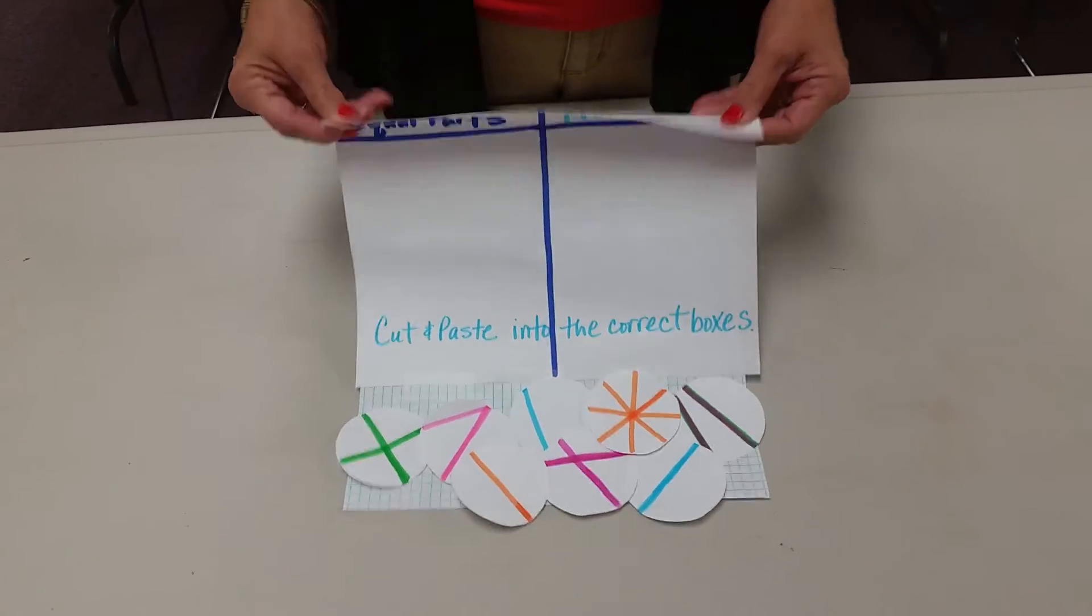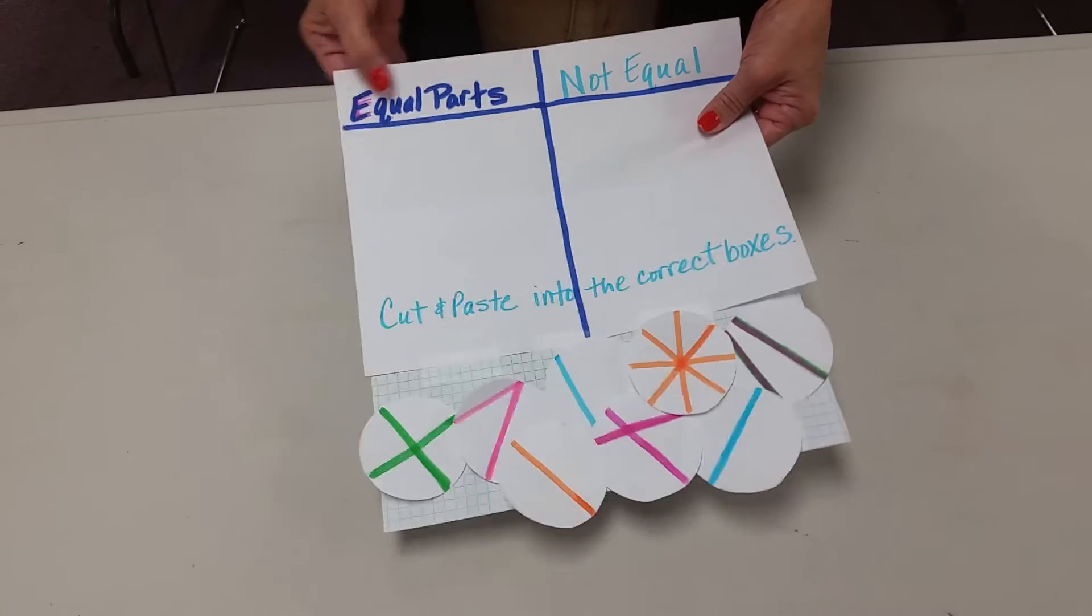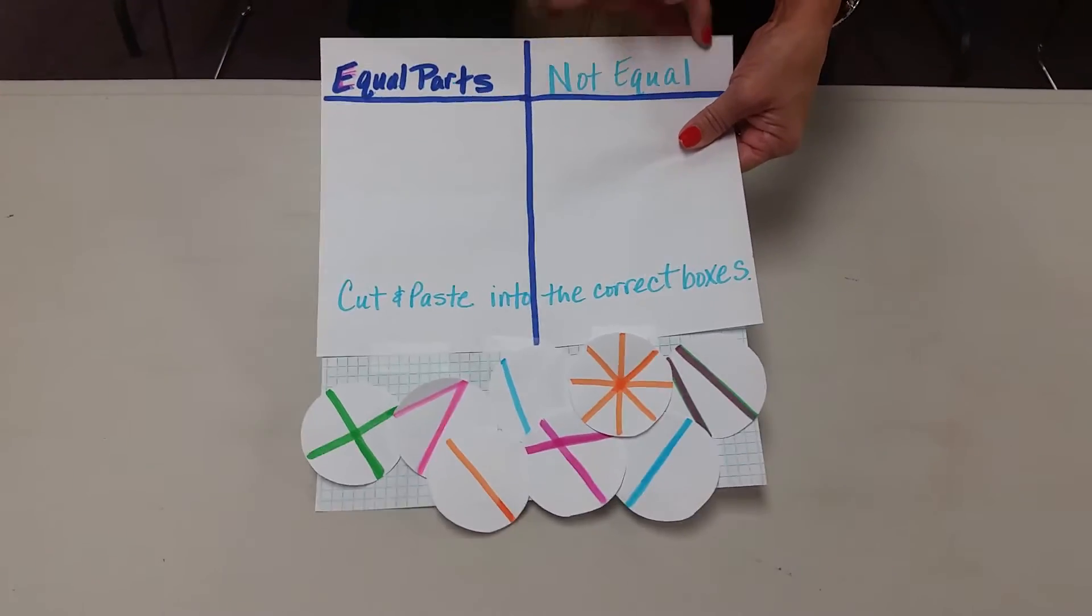Then I fold it over one more time to create a border where I can write my headings: Equal parts and not equal parts.